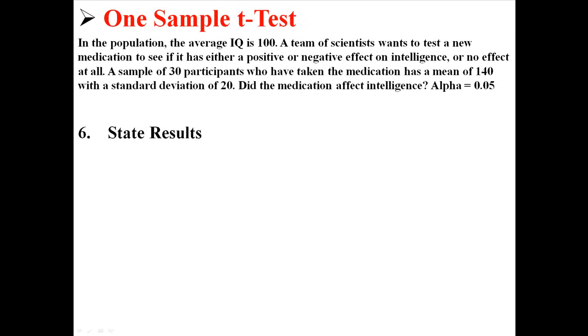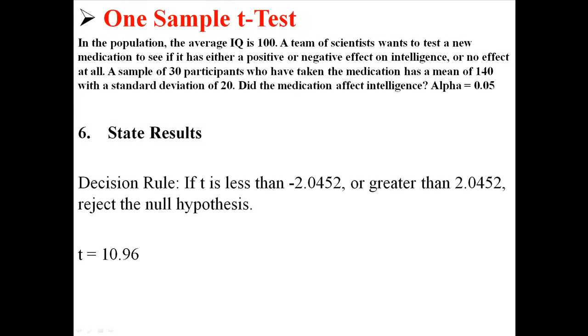So the next step is for us to state our results. Now remember, our decision rule was if the t was less than negative 2.04 or greater than 2.04, we're going to reject the null hypothesis. And we found a t of 10.96. That 10.96 is definitely greater than 2.04, so we're going to reject H0. We're going to reject the null hypothesis.